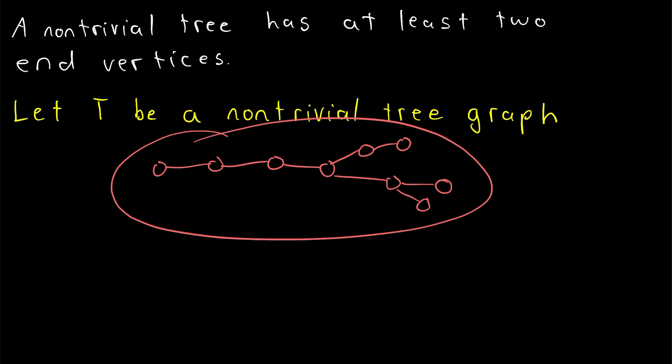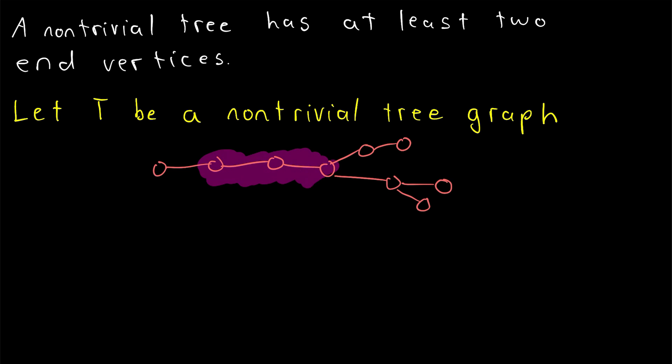Here's a tree graph, and we could look at any path in this graph. For example, suppose we look at this path containing these three vertices. None of the vertices in this path are end vertices. But what if we look at a longest path in the graph? If we look at a longest path in the graph, we notice that the first vertex and the last vertex are both end vertices.